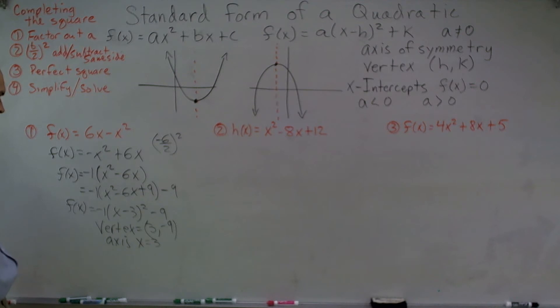Now, to find the zeros, I'm kind of running out of space here. Remember, to find the zeros, you just need to have f(x) = 0. So I could say 0 = 6x - x². Factor out an x, I have 0 = x(6 - x).